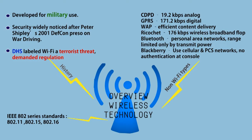Bluetooth is used for personal area networks, with range limited only by transmit power. BlackBerry used cellular and PCS networks, with no authentication at the console.